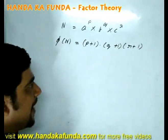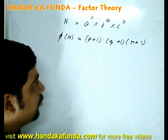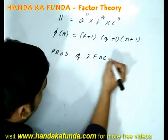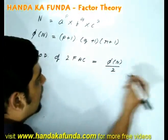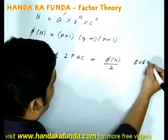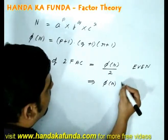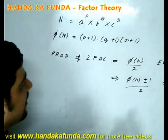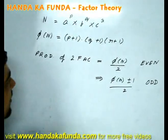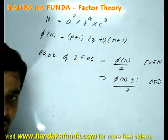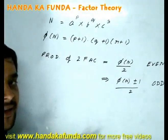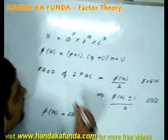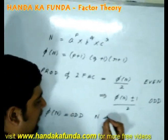If I want to find out the number of ways in which n can be expressed as a product of 2 factors, that will be given by phi n by 2 if it is even and phi n plus or minus 1 by 2 if phi n is odd. Let's look at that for a little more. If phi n is odd, what does that mean? That means p plus 1, q plus 1 and r plus 1 all of them are odd. Which means p, q and r they are all even. Which essentially means that if phi n is odd, all my powers p, q, r are even or n is a perfect square.